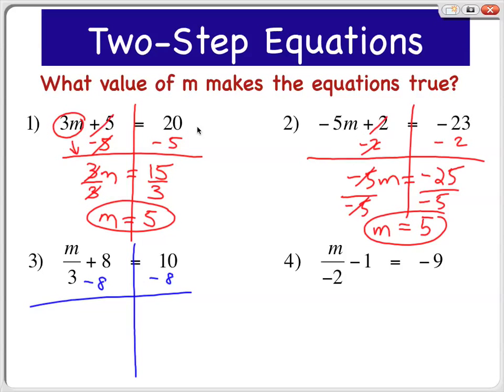Negative 8 is the additive inverse of positive 8, so we say they cancel. And all I'm left with is m divided by 3, and that's going to be equal to 10 minus 8 is 2.